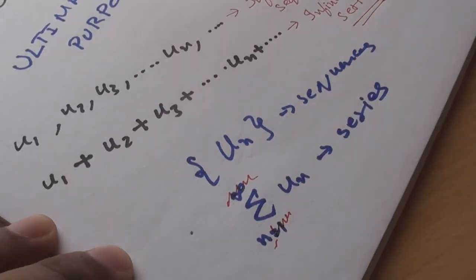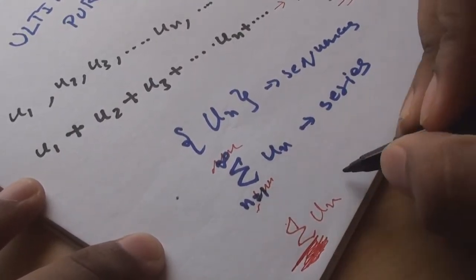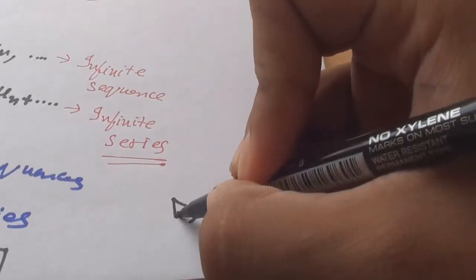Well, series are denoted by Σun where n ranges from 1 to infinity. Or if you are lazy, you can just drop these off and write Σun. Or if you are me, you can simply write Σu. Forget the n, just sitting there wasting ink. Precious. Precious ink.